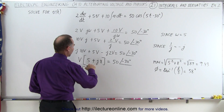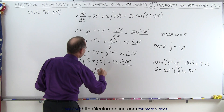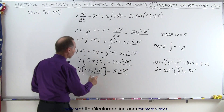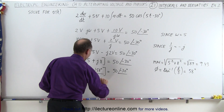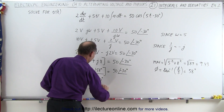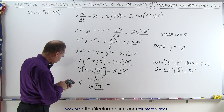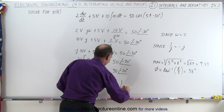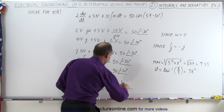Now we can say that V times 9.43 at a phase angle of 58 degrees is equal to 50 at a phase angle of minus 30 degrees. So V is equal to 50 at a phase angle of minus 30 degrees divided by 9.43 at a phase angle of 58 degrees, which gives us 5.3 for the magnitude, and a phase angle of minus 30 minus 58, which is minus 88 degrees.